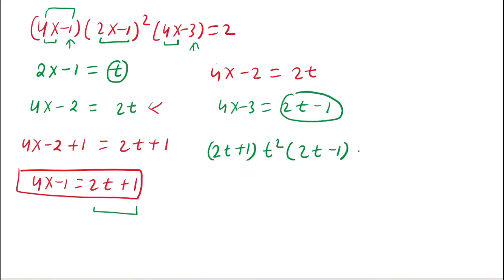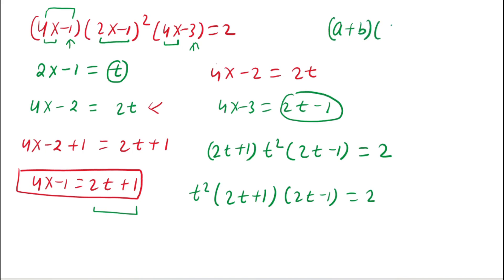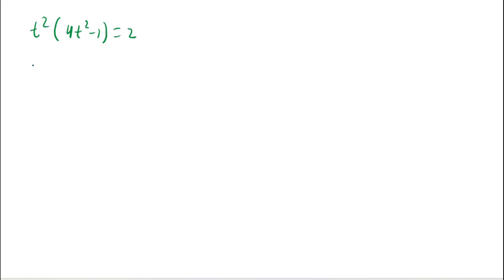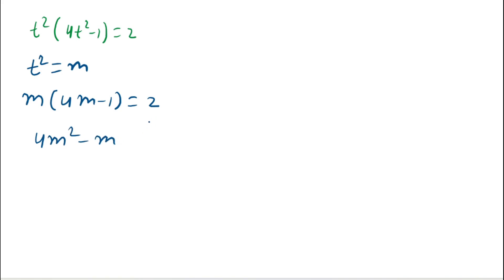The equation becomes (2t + 1) · t² · (2t - 1) = 2. Applying the identity (a + b)(a - b) = a² - b²: t²(4t² - 1) = 2. Now we apply a second substitution: let m = t². So m(4m - 1) = 2, which gives 4m² - m - 2 = 0. This is a quadratic equation.